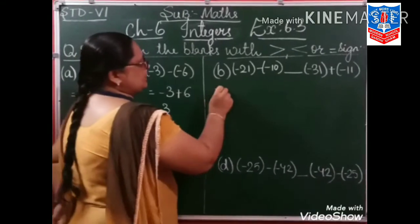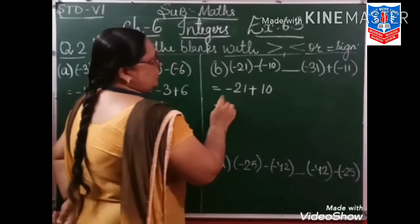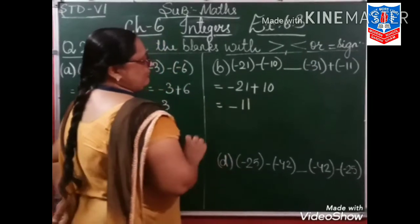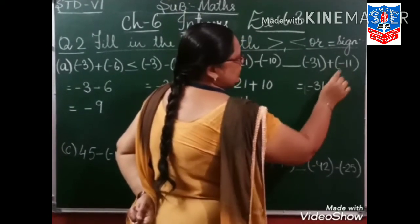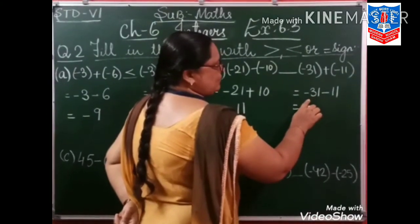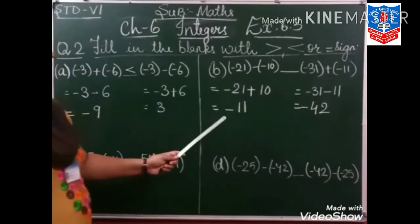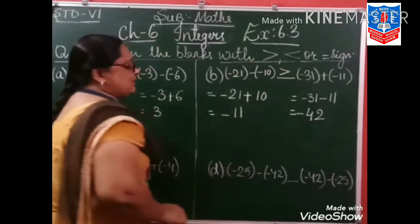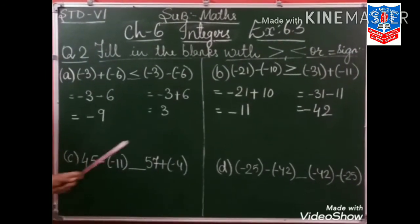Sum number B — same method. Minus 21 minus minus plus 10 — minus plus minus, 21 minus 10 is 11, so minus 11. Here: minus 31 plus minus minus 11 — minus minus plus, 31 plus 11 is 42, and the sign is minus, so minus 42. Now see, minus 11 versus minus 42 — which is greater? In negative integers, the smallest value has the greatest value. So minus 11 is greater. Now sum number C and D is your homework.